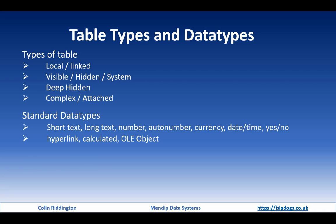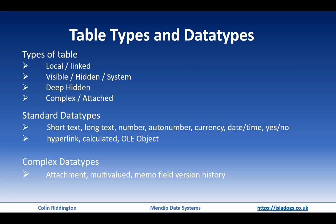Then there are three types of complex data types introduced in Access 2007: attachment fields and multi-value fields — both strongly discouraged by most serious developers due to all sorts of problems, though very appealing to new database users. The third type, the least well-known, is memo field version history, which is less problematic but also less used.